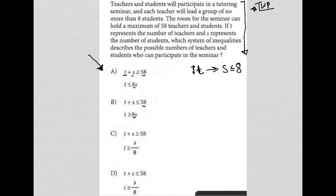The next sentence says, the room for the seminar can hold a maximum of 58 teachers and students. Okay. So that means the number of teachers plus the number of students has to be less than or equal to 58. Now that's very valuable because I already see a lot of this T plus S. So this is a direct translation from that sentence. The room for the seminar can hold a maximum of 58 teachers and students.